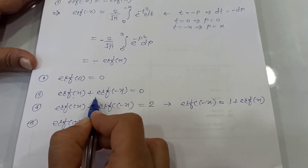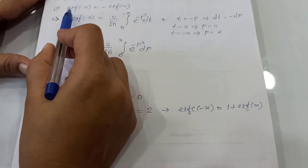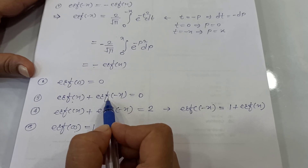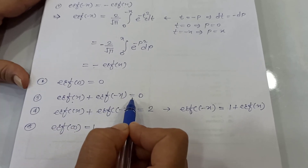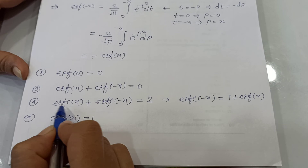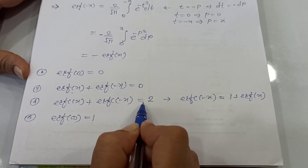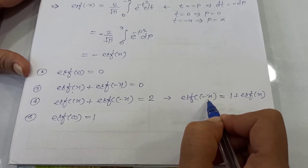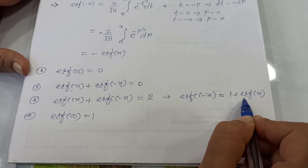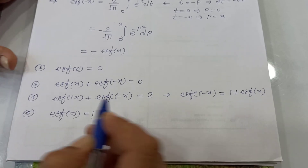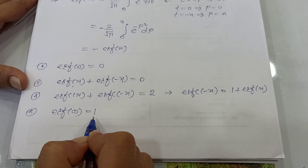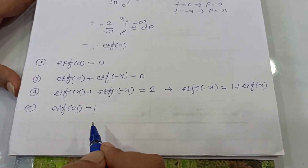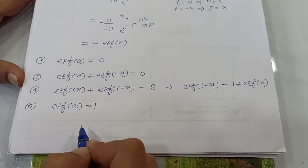The fourth property is Erf of x plus Erfc of minus x equals 2. This can be proved using the property that Erfc of minus x equals 1 plus Erf of x. The last property is Erf of infinity equals 1, and this can be proved using the definition of improper integrals. This concludes the topic of error function.